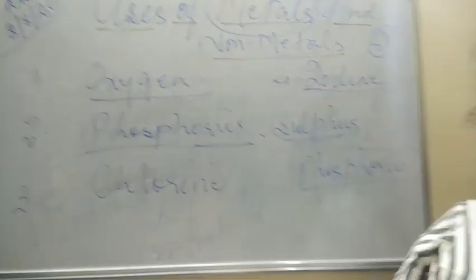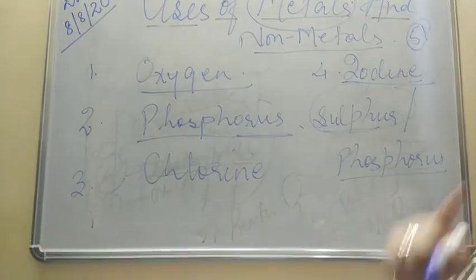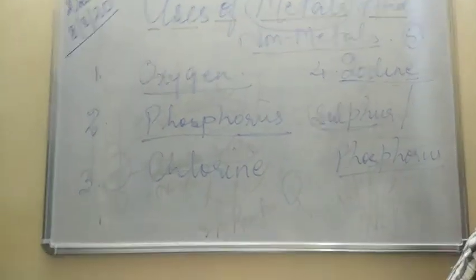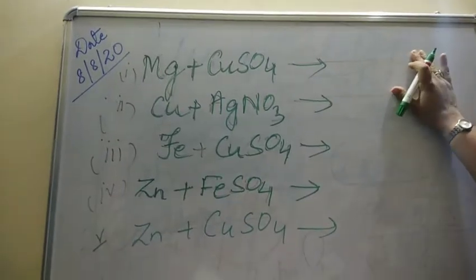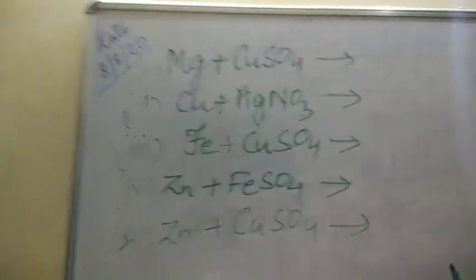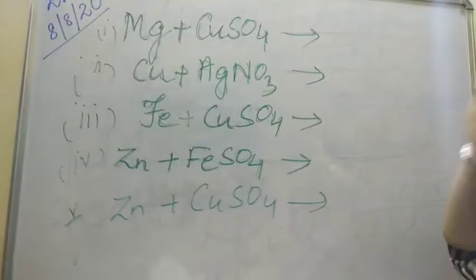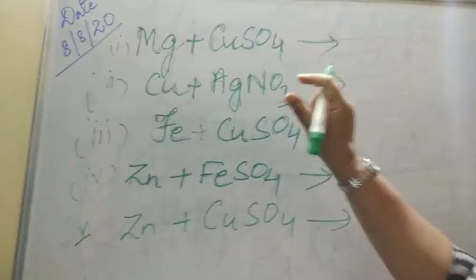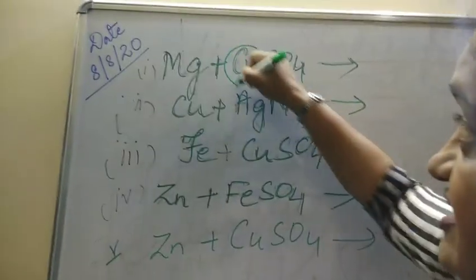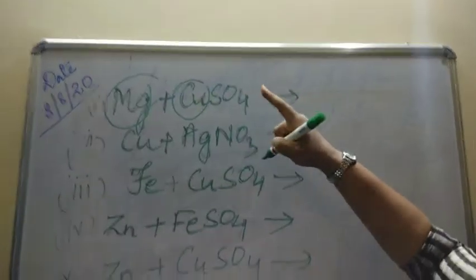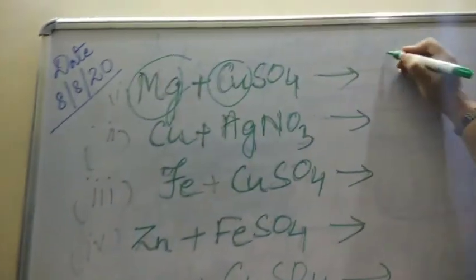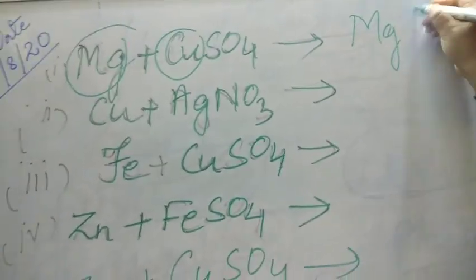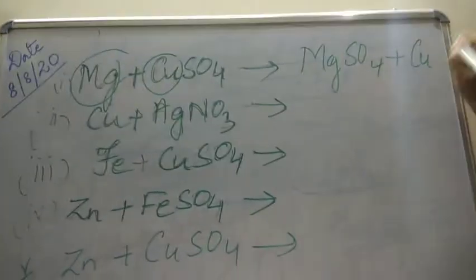Let's do the home assignment discussion right now which is given with the topic displacement reaction. Let's see children. I gave you Mg plus CuSO4. I told you how to see the displacement reaction or how to see the displacement is happening in that reaction. You have to see the metals. So the metal is Cu and Mg. You have to see which one is more reactive than other. So Mg is more reactive, so it will take the place. MgSO4 plus Cu.